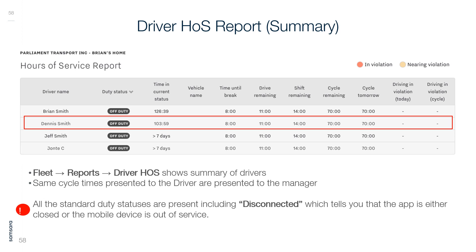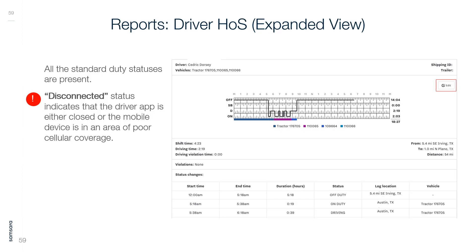Driver Hours of Service Report: Go to Fleet Reports > Driver Hours of Service for a summary of drivers. The same cycle times presented to the driver are presented to the manager. All standard duty statuses are present, including Disconnected, which indicates the app is either closed or the mobile device is out of service or in an area of poor cellular coverage.